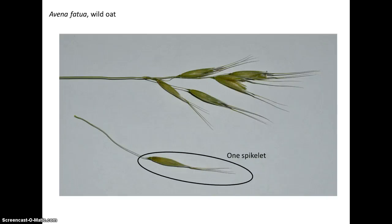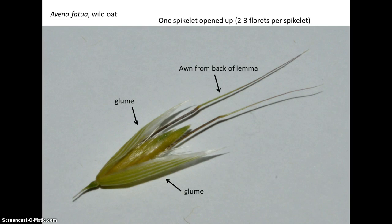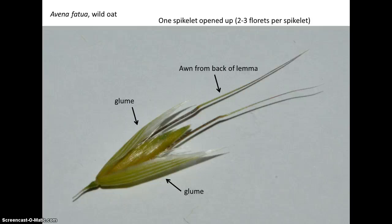To review: a spikelet will almost always have two glumes at the base and one or more florets, and a floret consists of a lemma, a palea, and the actual flower. Here's one spikelet in wild oat, opened up. This is past the flowering stage and going into fruit. We have the two glumes opened up, and within them we have two florets. The long structure is called an awn. Awns can come from glumes or lemmas — usually lemmas — and in this case the awn comes from the back of the lemma. So we have two awns, meaning two florets, each with a lemma surrounding a palea surrounding a flower.